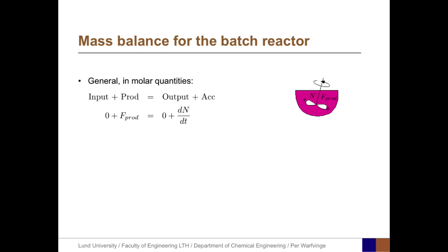The mass balance equation for the batch reactor builds on the general mass balance equation: input plus production equals output plus accumulation. However, since we do not have any input nor any output, we get F_prod equals dN/dt. That means that the molar rate of production from the chemical reaction balances the change in molar amounts within the reactor.